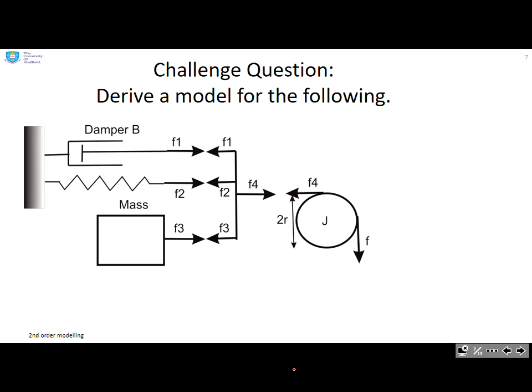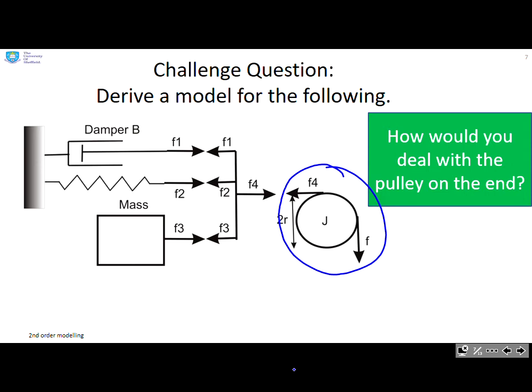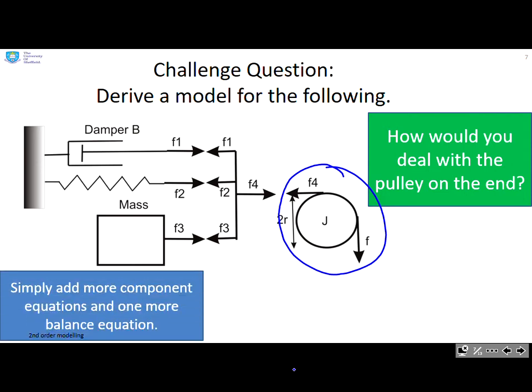Now, here's a challenge question for you. How would you derive a model for the following? And you can see all I've done is added a pulley on the end of the suspension system. So how would you deal with this particular problem? Well, the answer is more straightforward than you might think. You simply add component equations and one more balance equation. And here they are. So we'll let you look at that in slower time.